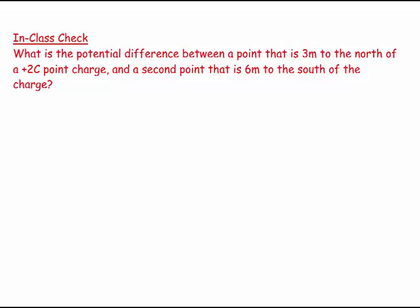Welcome. This question says: What is the potential difference between a point that is 3 meters to the north of a +2 coulomb point charge and a second point that is 6 meters to the south of the charge? North and south are just in opposite directions. So here we have a positive charge, and I'm going to visualize it.